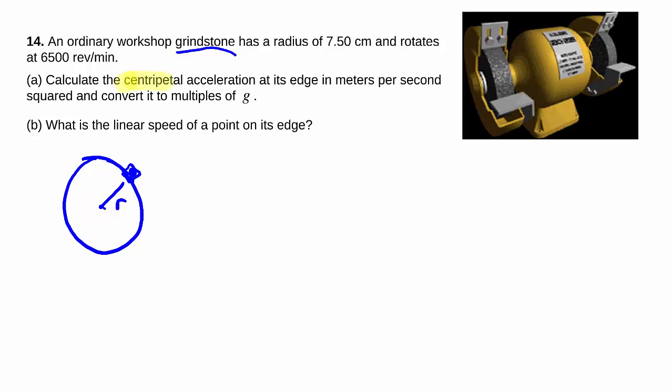We want to find the centripetal acceleration, and the centripetal acceleration is given by v squared over r. The faster it is, the more acceleration you're doing because you're changing the direction. And also, the bigger it is, you're doing a gentler turn, so the acceleration is less.